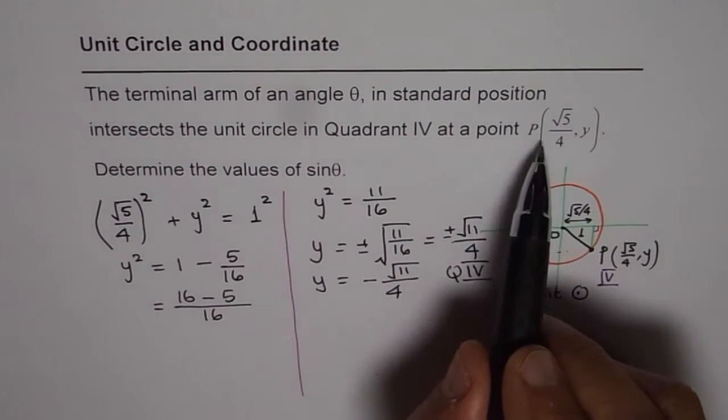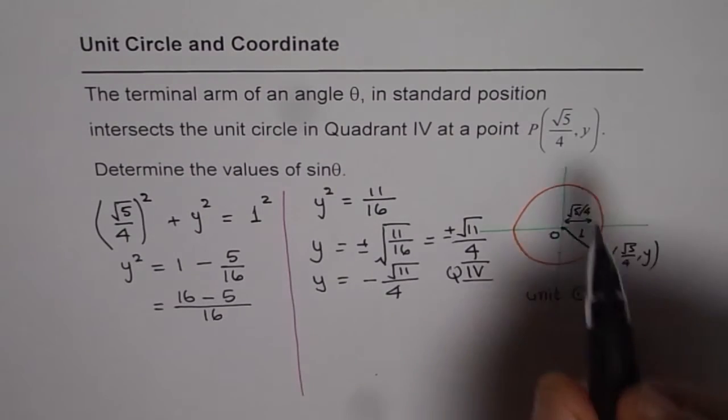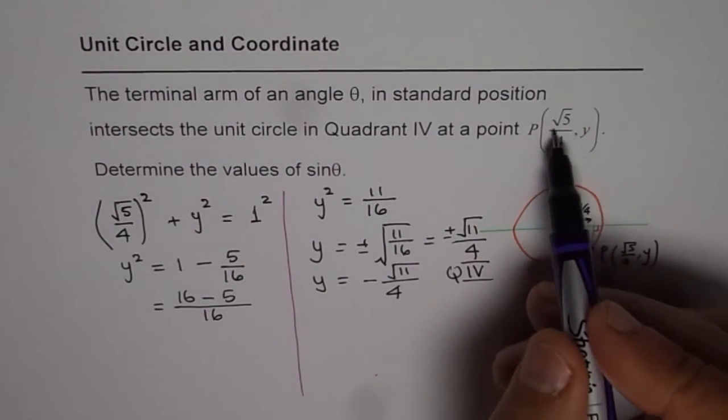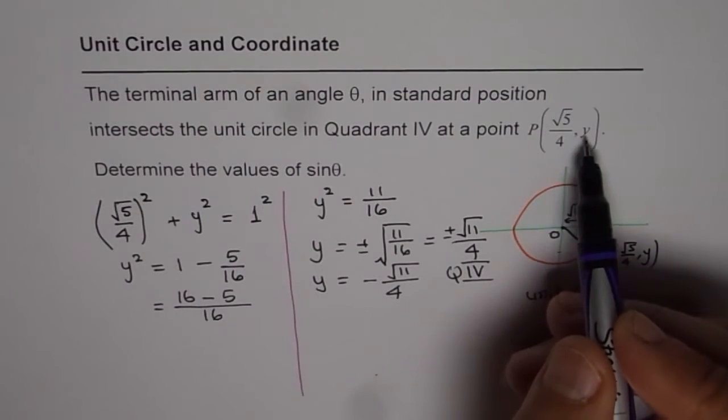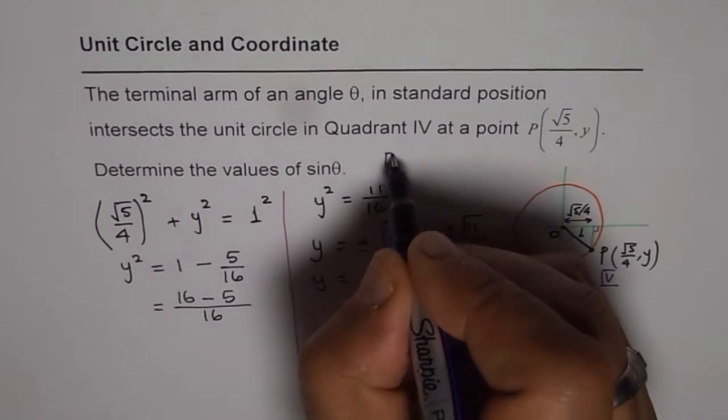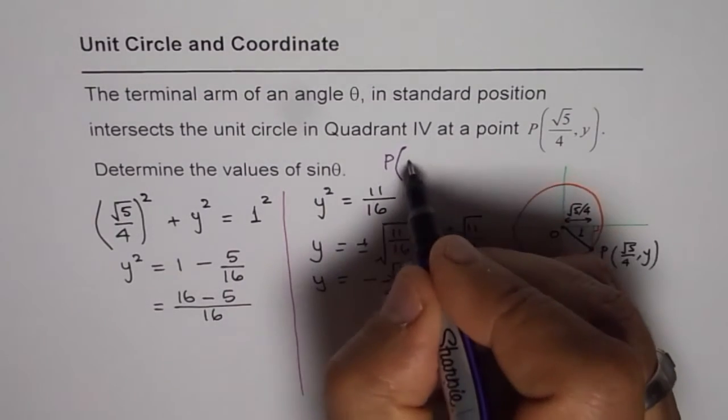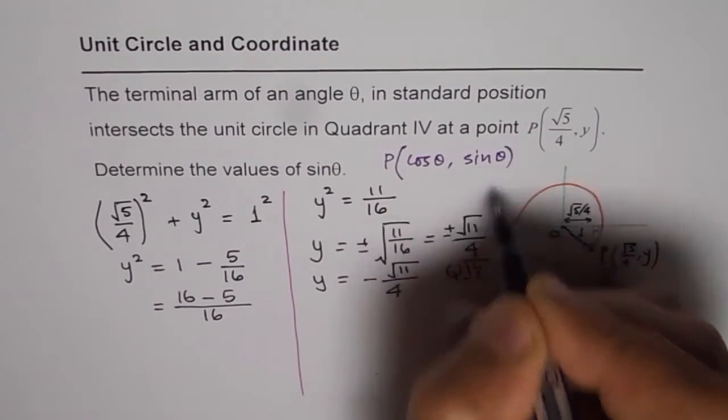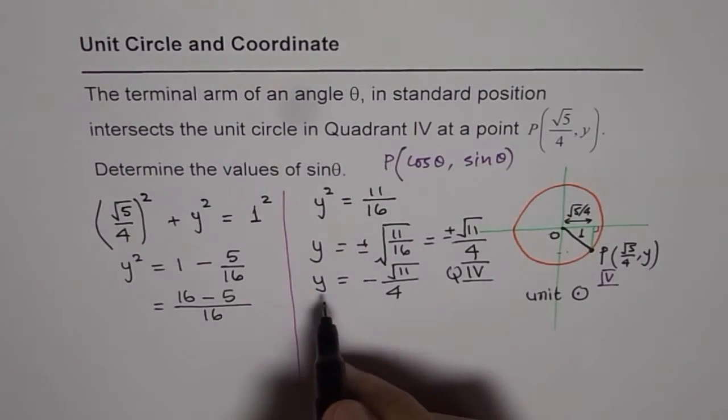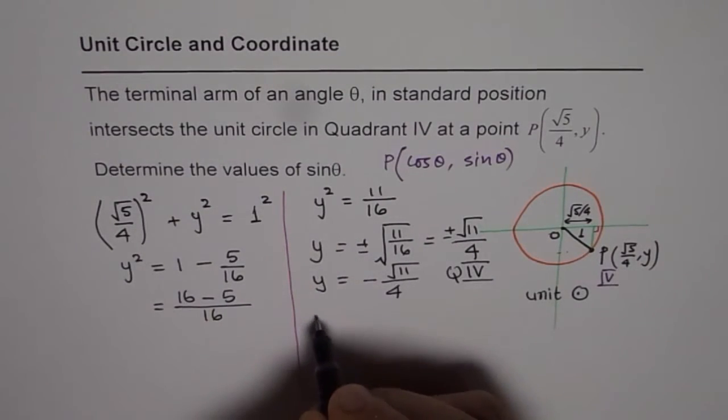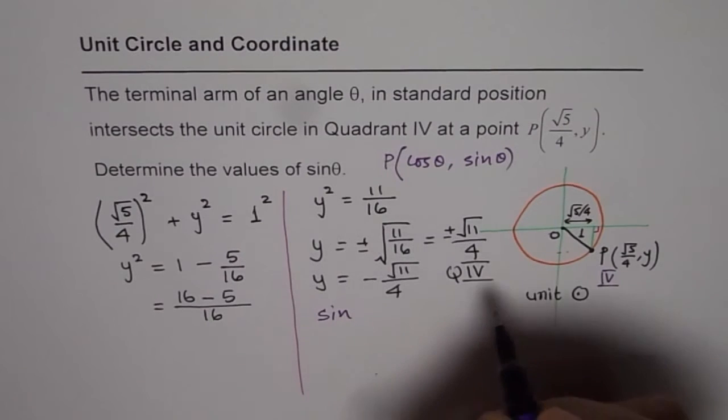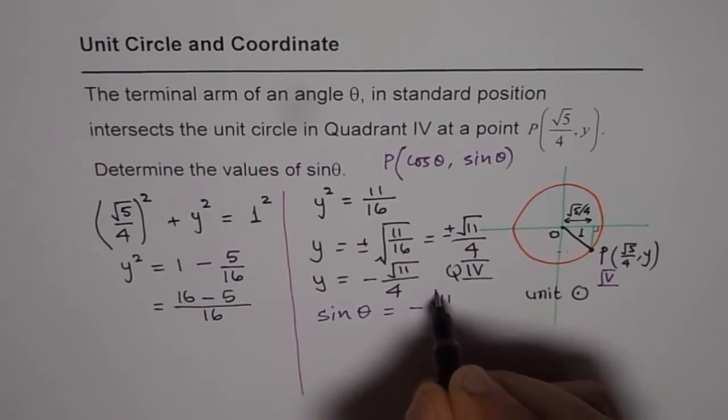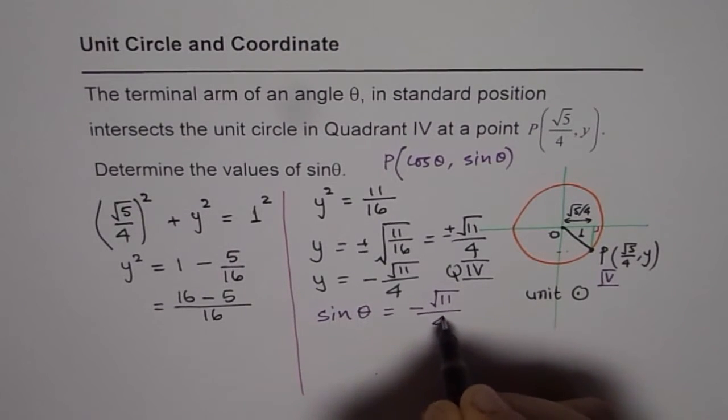Now whenever you are given the polar coordinates. So when we say p value is square root 5 over 4 comma y. It really means we are writing this as cos of theta, sine of theta. So y is actually sine of theta. So y we have got as this. So in this case sine of theta is equal to minus square root 11 over 4.